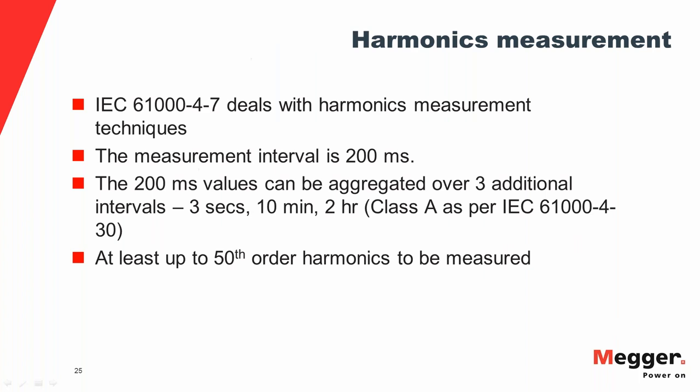Harmonics measurement is governed by IEC 61000-4-7. The measurement interval specified is 200 milliseconds, corresponding to 10 cycles in a 50 Hz system or 12 cycles in a 60 Hz system. These 200 ms values can then be aggregated over longer intervals — three seconds, 10 minutes, or two hours — for Class A instruments. Class A has the most stringent requirements. The standard also specifies that at least up to the 50th order harmonic must be measured.